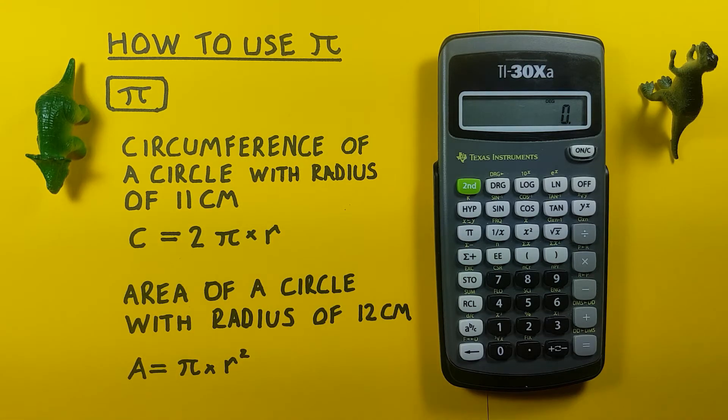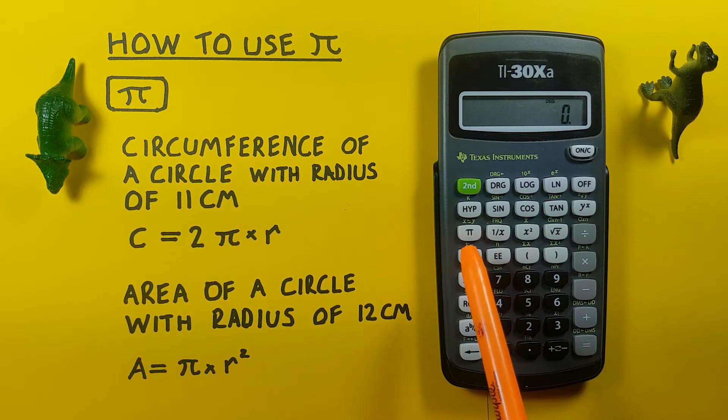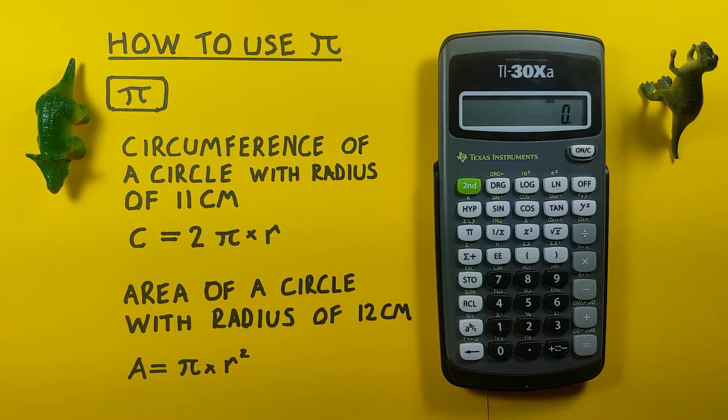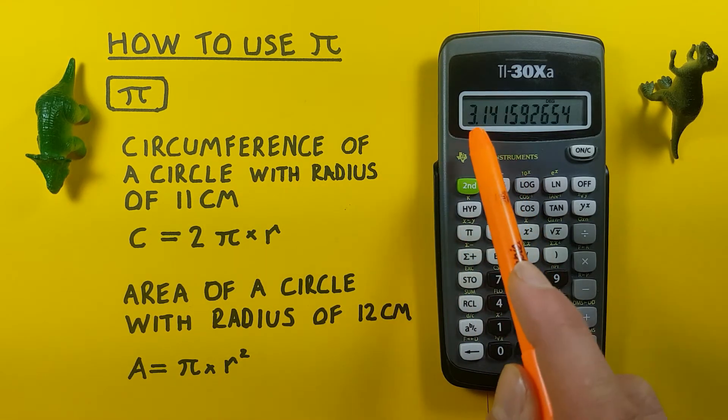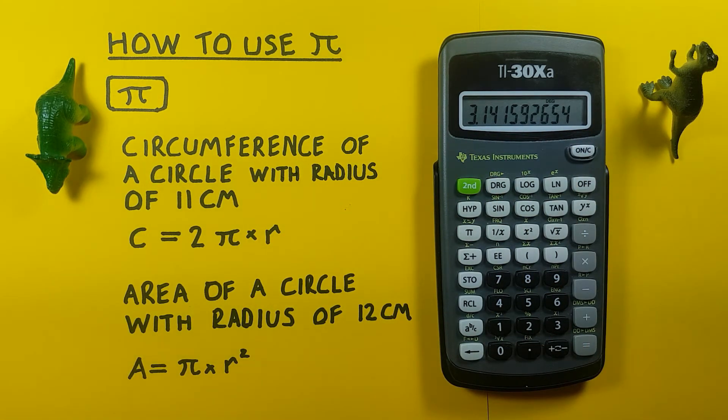To do this, we'll be using the PI key that looks like this and is located here. When we press the PI key, we see this number, which is PI in its decimal form. You won't see a symbol, but that's PI for us.